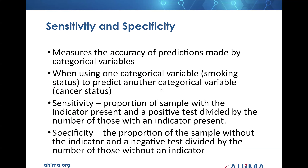Another key concept — more important than how to do the calculations — is sensitivity versus specificity. When we're using one categorical variable, say smoking status, to predict another categorical variable, say cancer status, the sensitivity would be the proportion of the sample with the indicator present and a positive test. That would be the proportion of people with positive smoking status and a positive status for cancer, divided by those with the cancer indicator present. Specificity is the proportion of the sample without the indicator and a negative test, divided by those without.